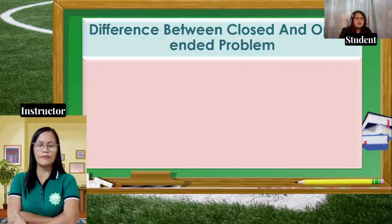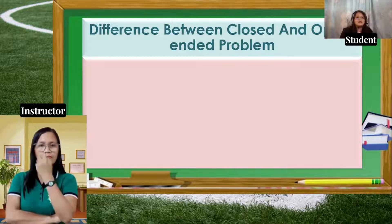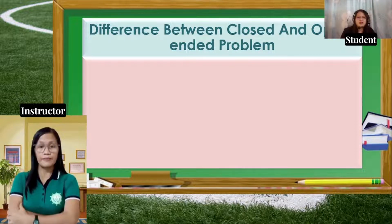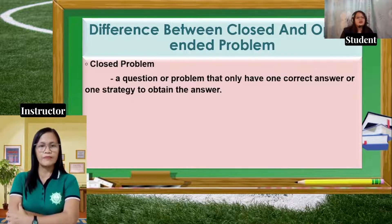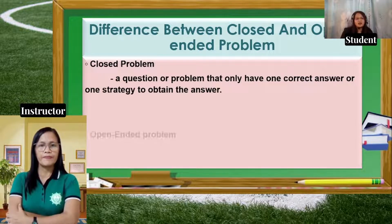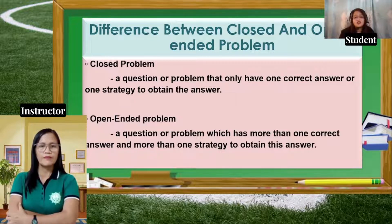What is the difference between closed and open-ended problems? Closed problems are questions that have only one correct answer and one strategy to obtain the answer, while open-ended problems are questions which have more than one correct answer and more than one strategy to obtain the answer.